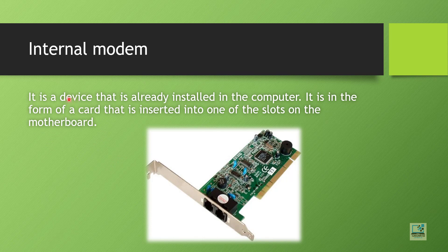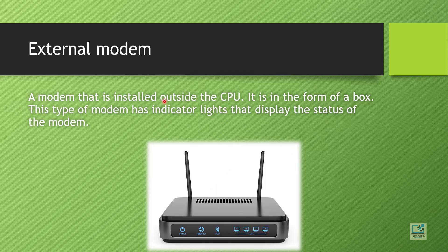The internal modem is a device already installed in the computer, in the form of a card inserted into a slot on the motherboard — installed within the CPU cabinet. The external modem is installed outside the CPU, in the form of a box with indicator lights that display the modem's status. The external modem is the common type used nowadays; if you take any broadband connection you will get this kind of device.